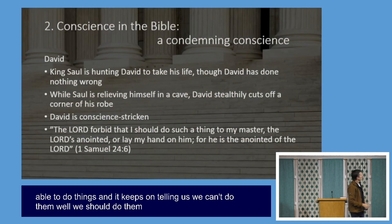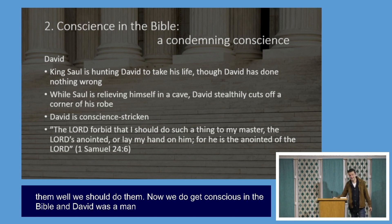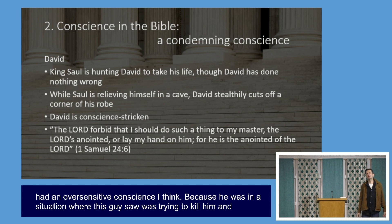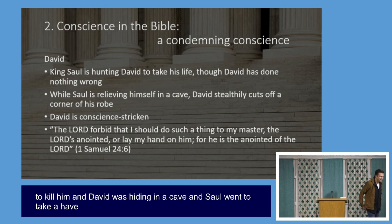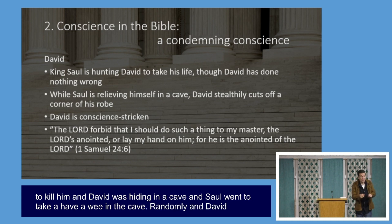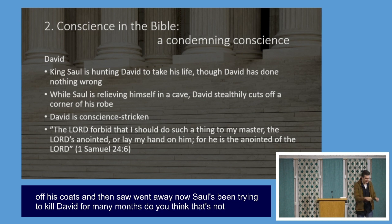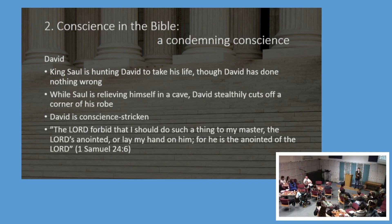David was a man with an over-sensitive conscience. He was hiding in a cave from Saul, who was trying to kill him. Saul went into the cave, and David crept up behind him and cut a little bit off his coat. Saul had been trying to kill David for months, yet David felt terrible about it — even just cutting a little bit of his coat. He said: 'The Lord forbid that I should do such a thing to my master, the Lord's anointed.' Where does that conscience come from, if not from God?